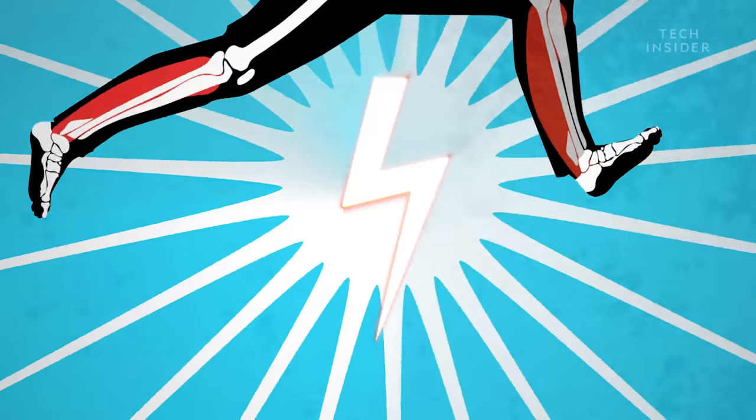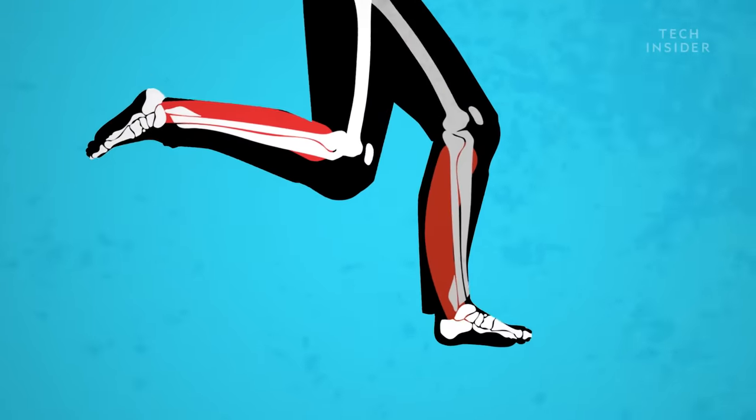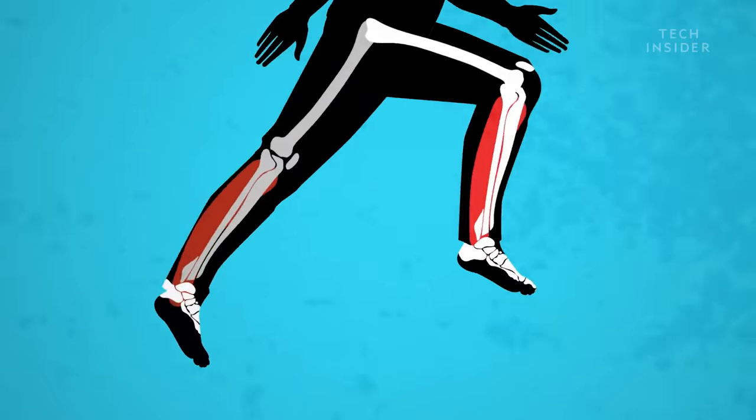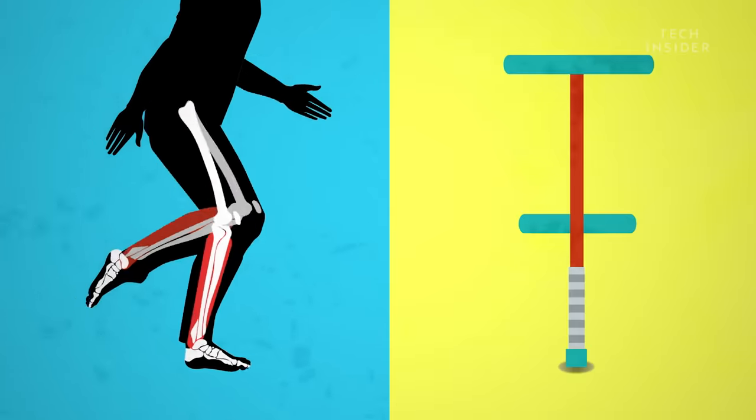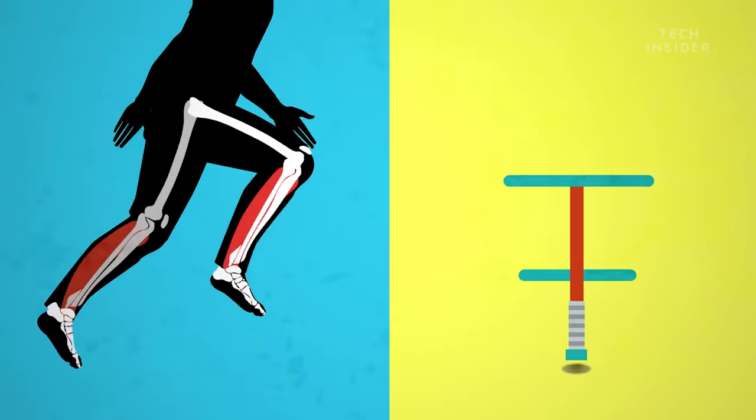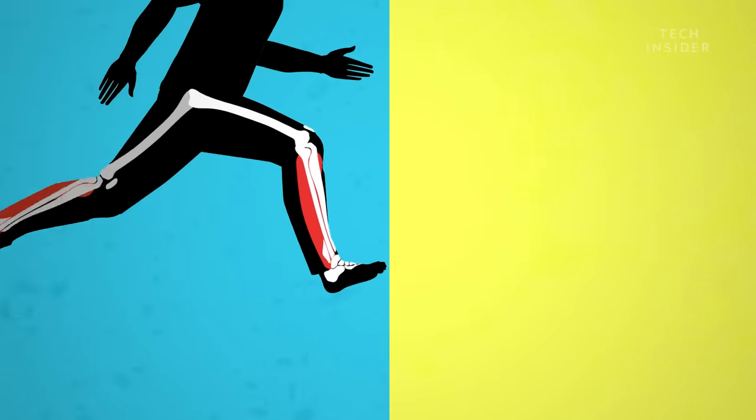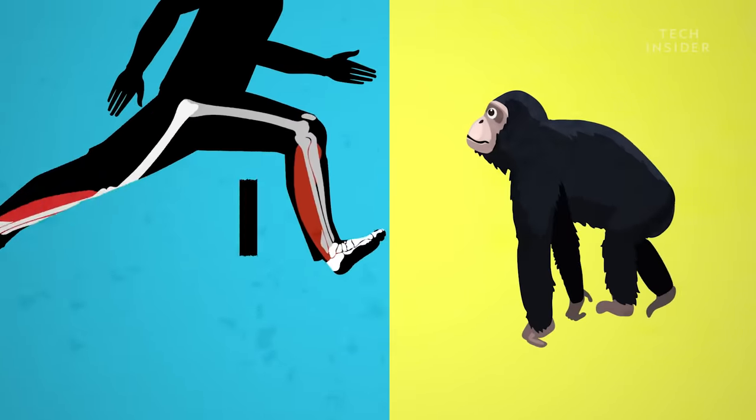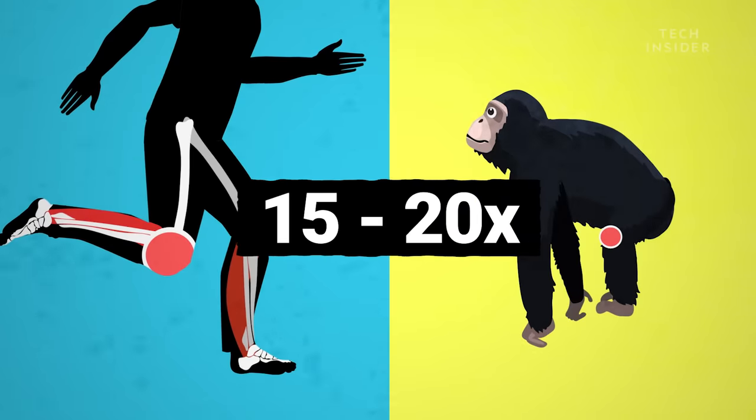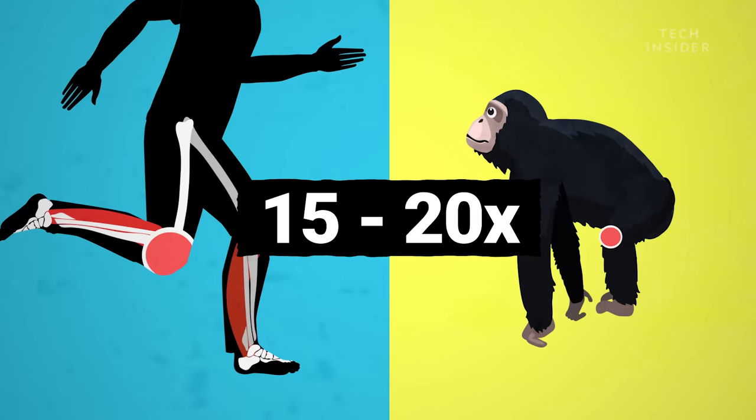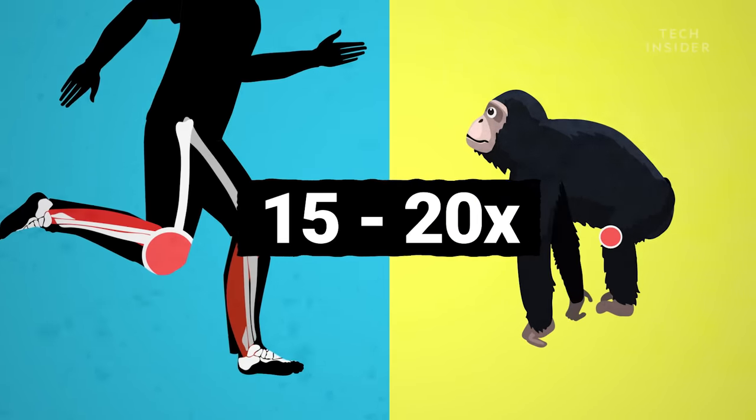Here's where our special adaptations come in. The tendons and muscles in our legs are very springy. They act like a pogo stick, converting kinetic energy from the aerial phase into elastic potential energy, which we can use later. In fact, our IT band can store 15 to 20 times more elastic energy than a chimpanzee's similar body part, the fascia lata.